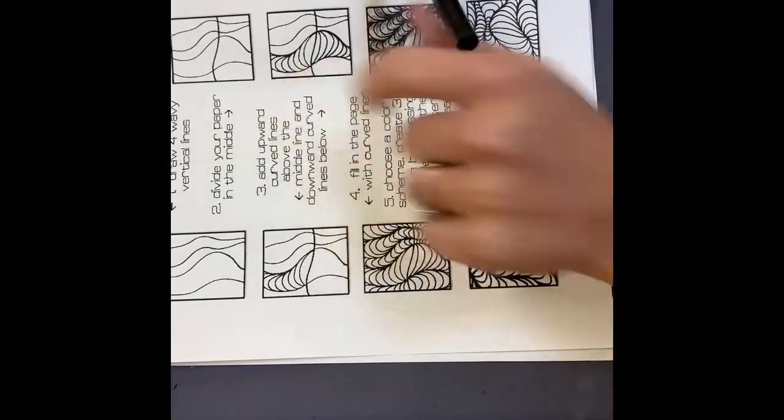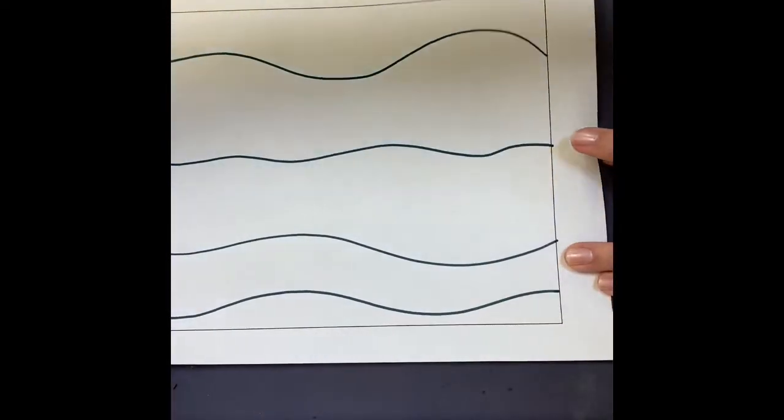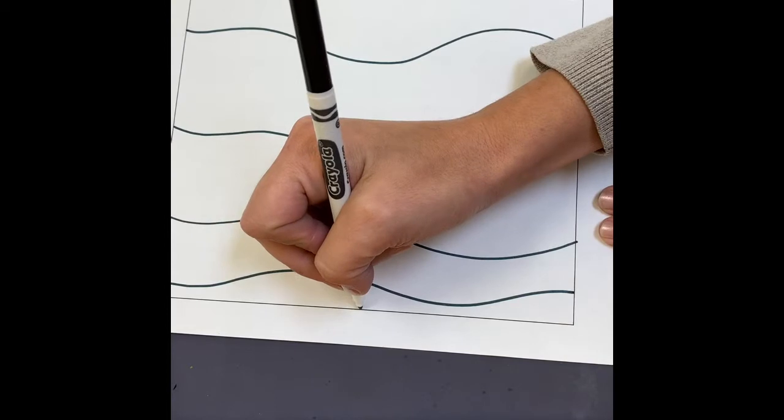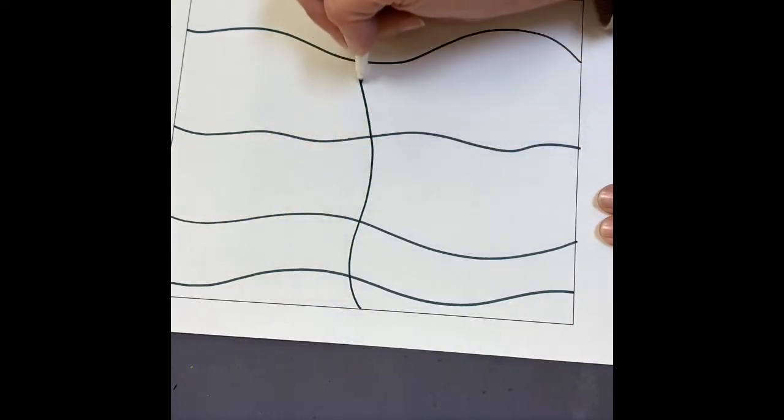Two: divide your paper in the middle. So we're gonna do a horizontal wavy line, just one through the middle.